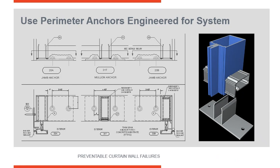If your subcontractor used manufacturer A last week and this week they're using manufacturer B, and you question them about the installation instructions and they say, 'Oh, don't worry about it, we installed curtain wall last week' — if it's not the same system, you need to stop and say, 'I want to see the installation instructions and make sure you're following it.' Every manufacturer has their own unique way that their system was tested. If your subcontractor does not install the system in accordance with the manufacturer's installation instructions, you could potentially have failures and the manufacturer might not be able to support the application.